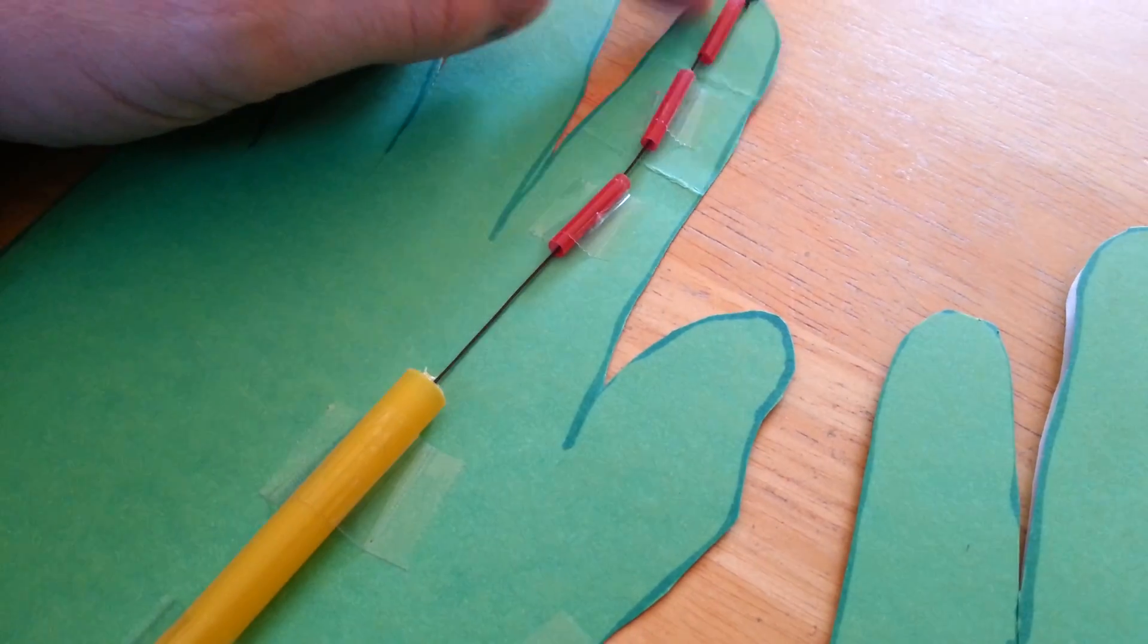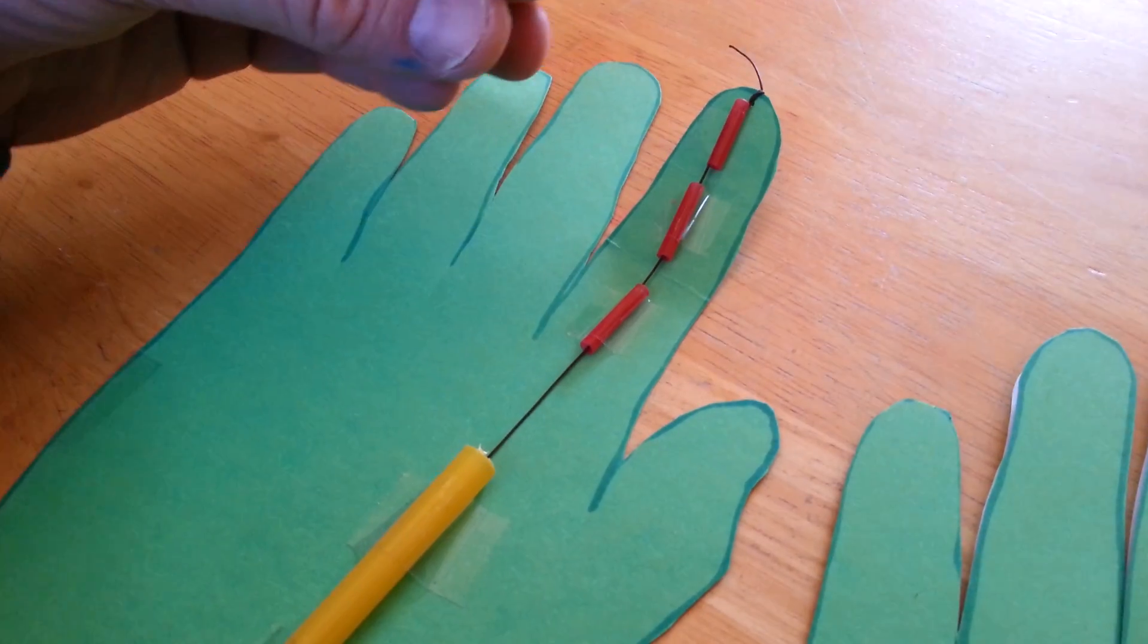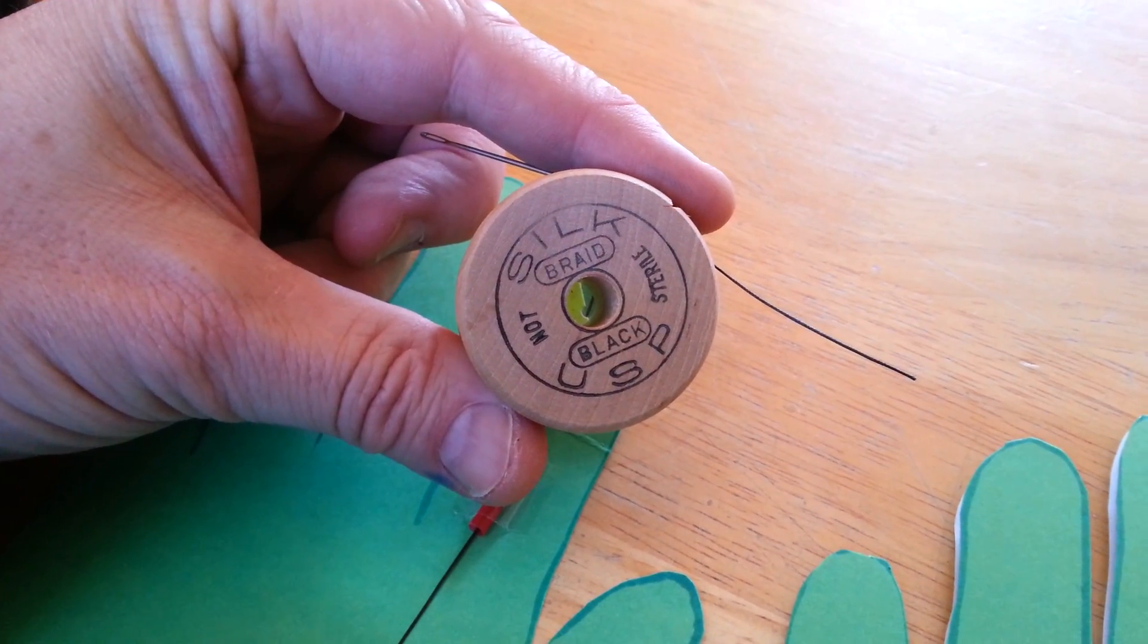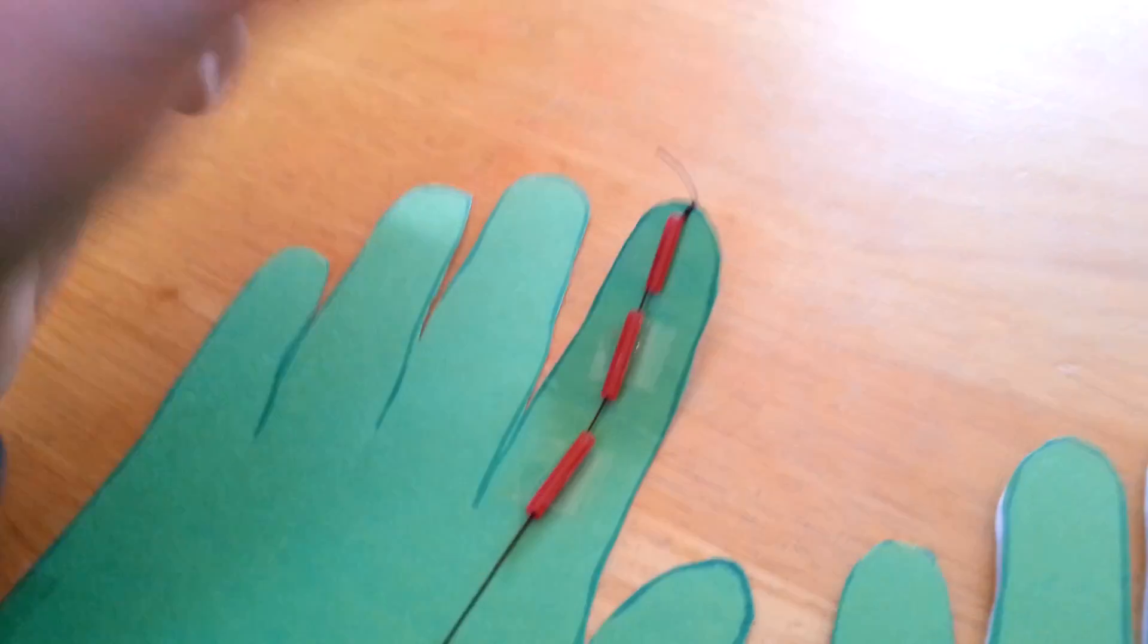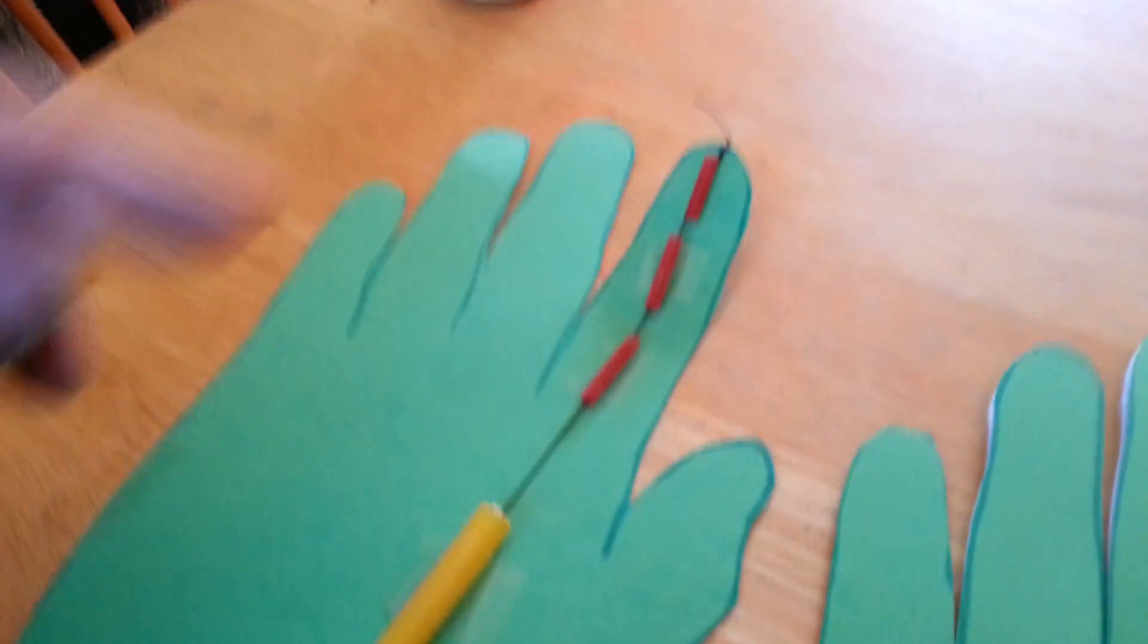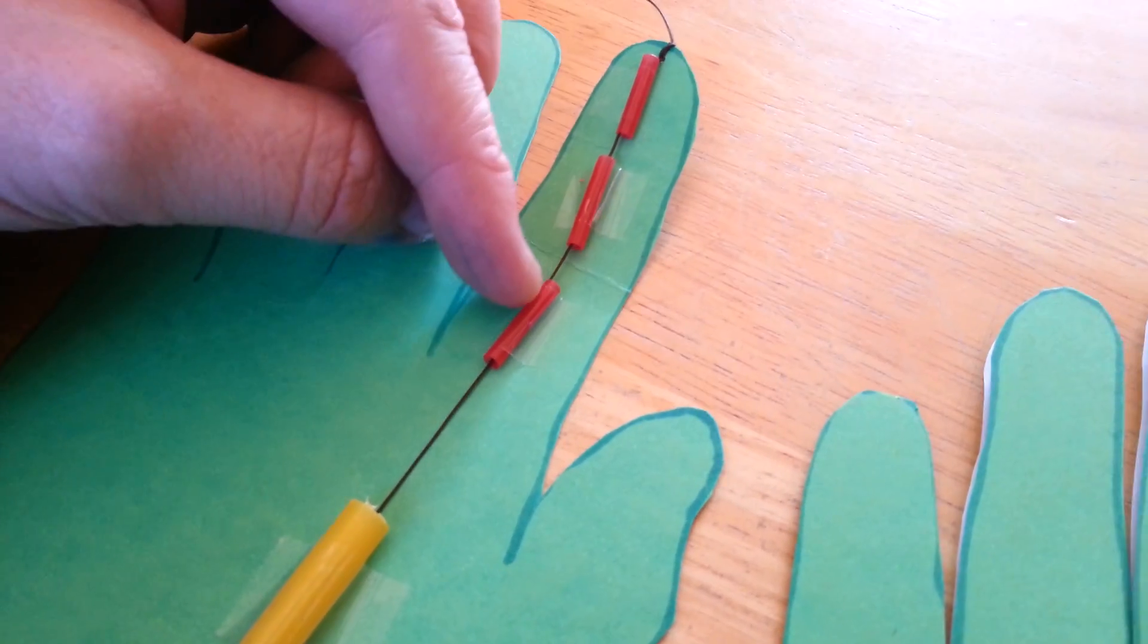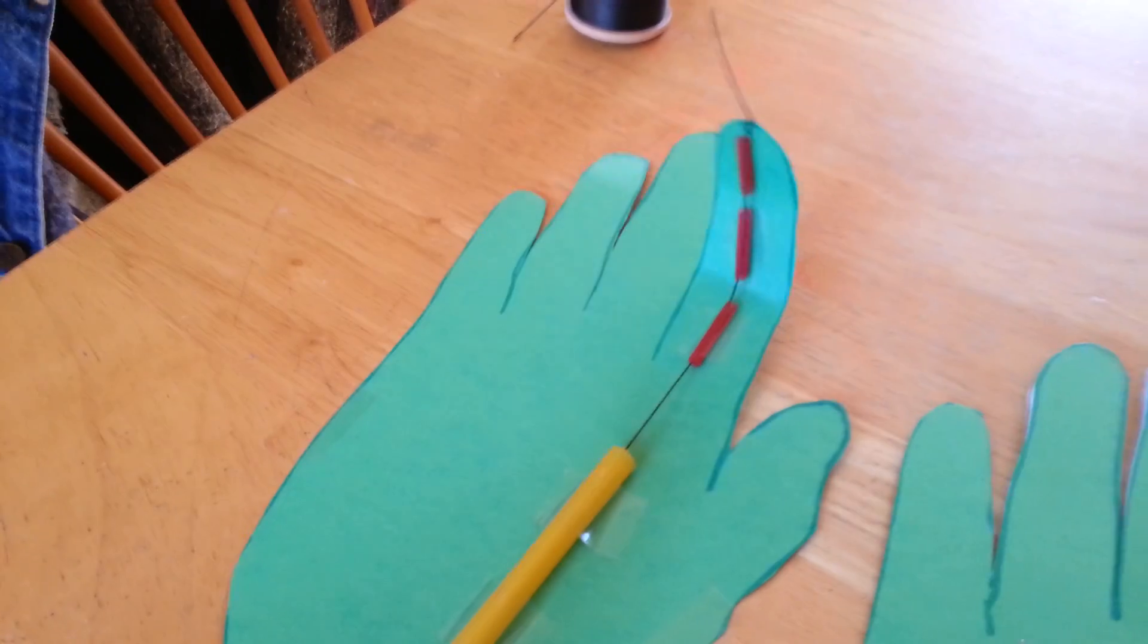And I took some straws and cut them up and used some strong, real strong thread. I think it said it was surgical thread. And so I took the thread, I put it through the segments of the straws, taped the straws down, and then got it to go.